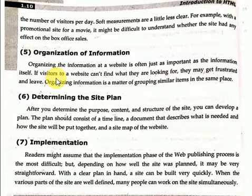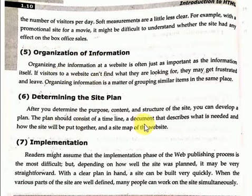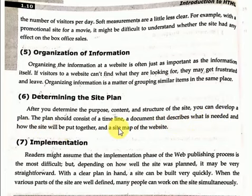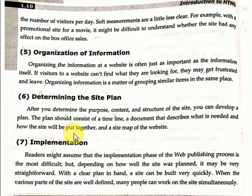Next is to determine the site plan. After you determine the purpose, content, and structure of the website, you can develop a plan. A plan should consist of a timeline, a document that describes what is needed and how the site will be put together, and a site map of the website.